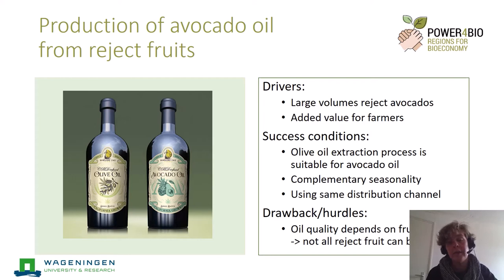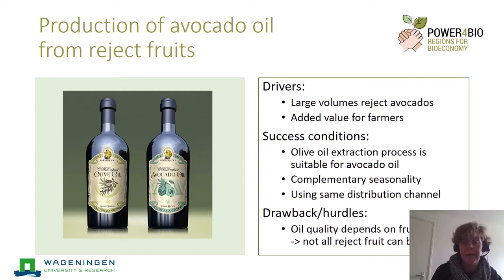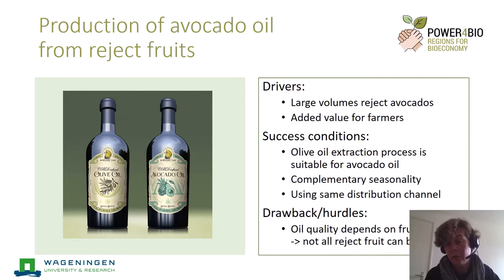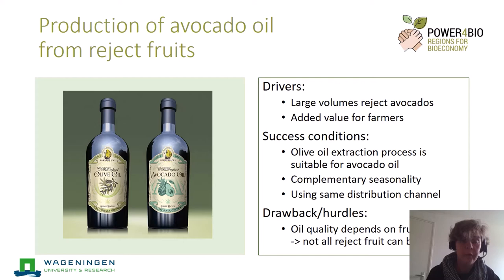Another example with a different success condition is the production of avocado oil from reject fruit. The driver is very obvious: there is a large volume of reject avocados in some areas and farmers would like to make money from that. People developed new processes and found that avocado oil processing can be done on olive oil equipment — an additional reason for success, as the equipment was already available. The avocados come in a different season, so there is complementarity in seasonality. You use the same distribution channel and the same type of market.